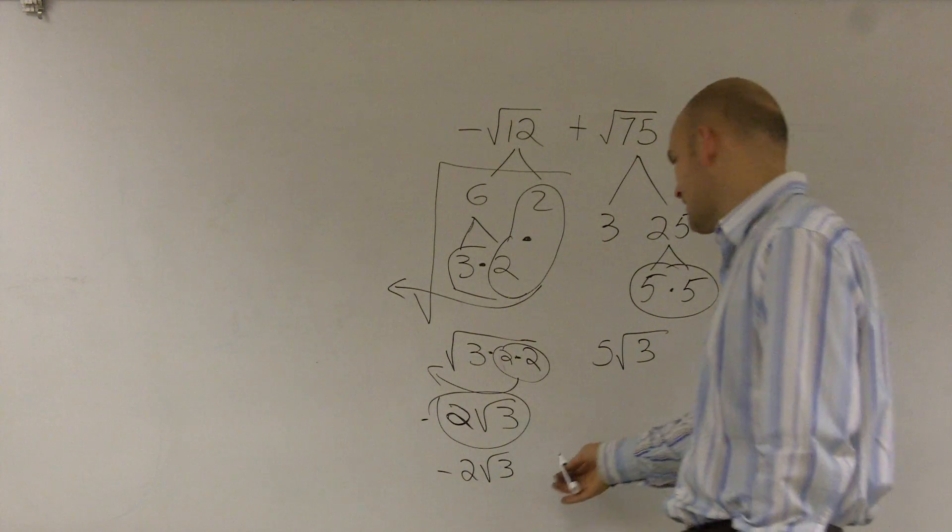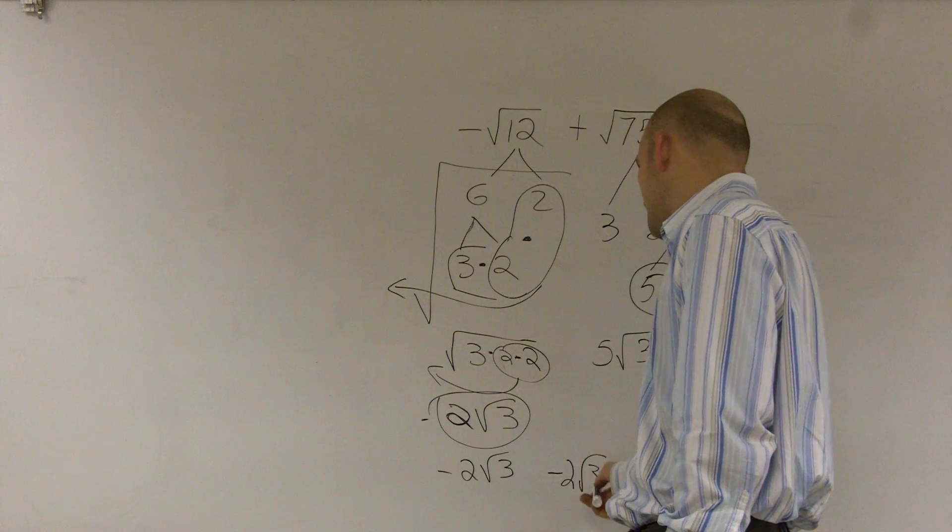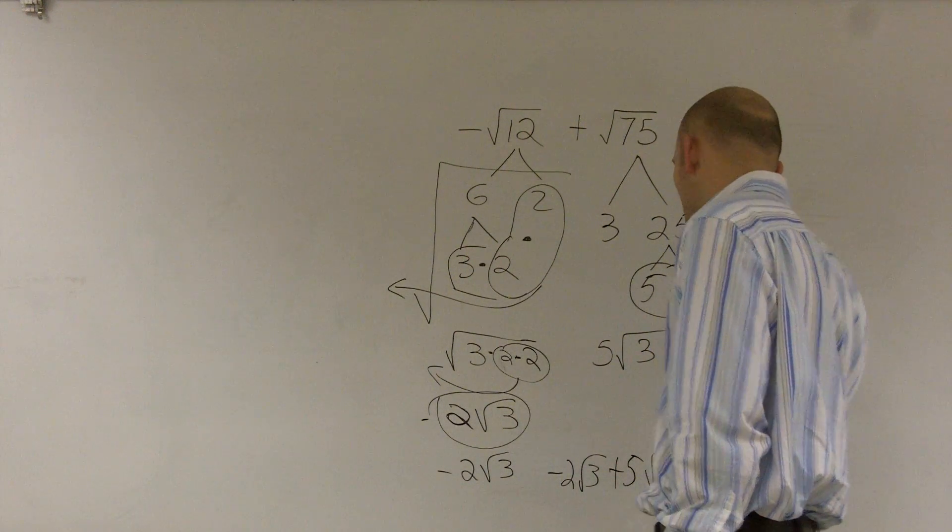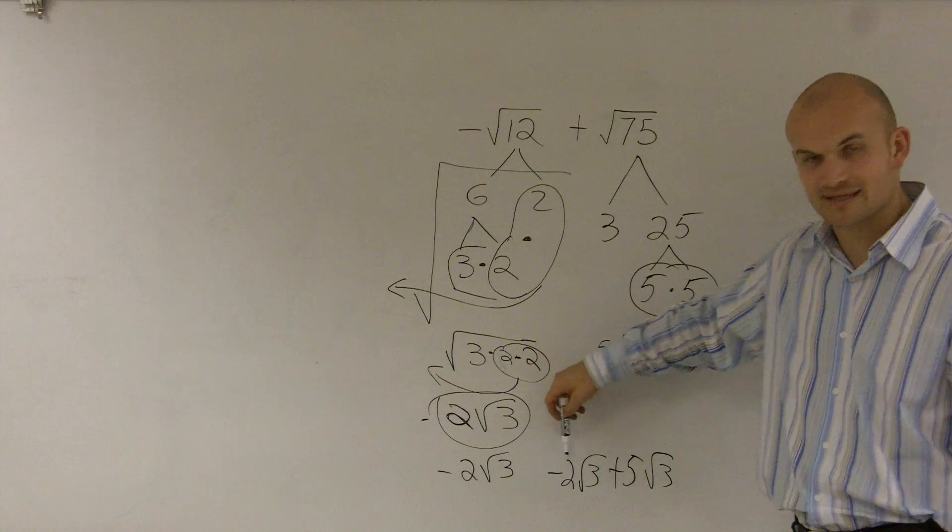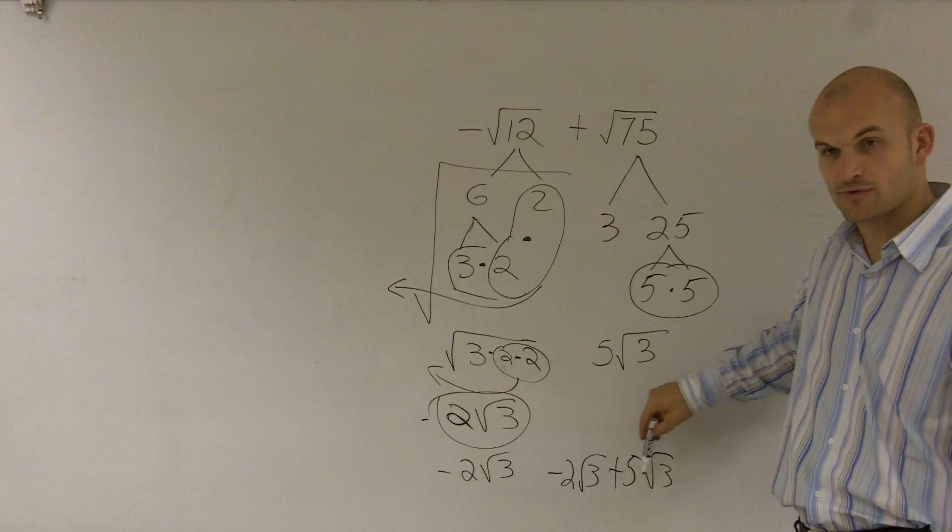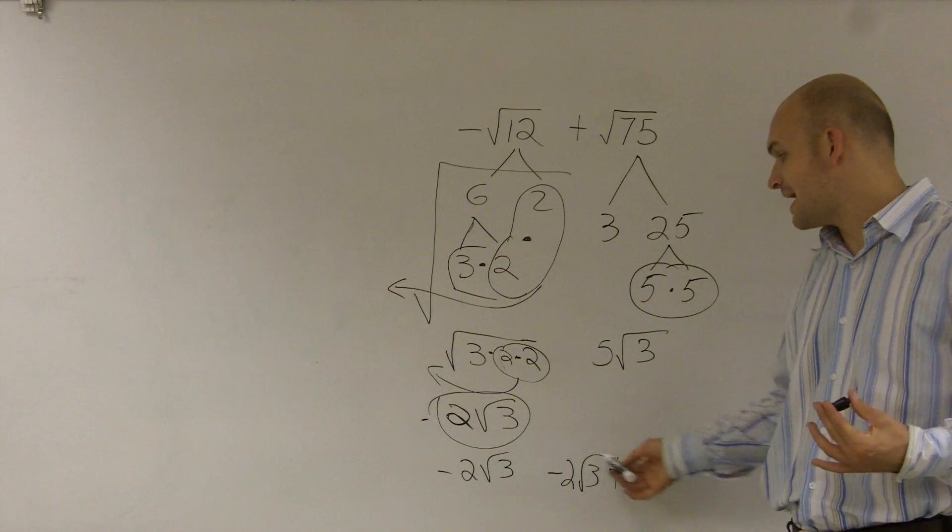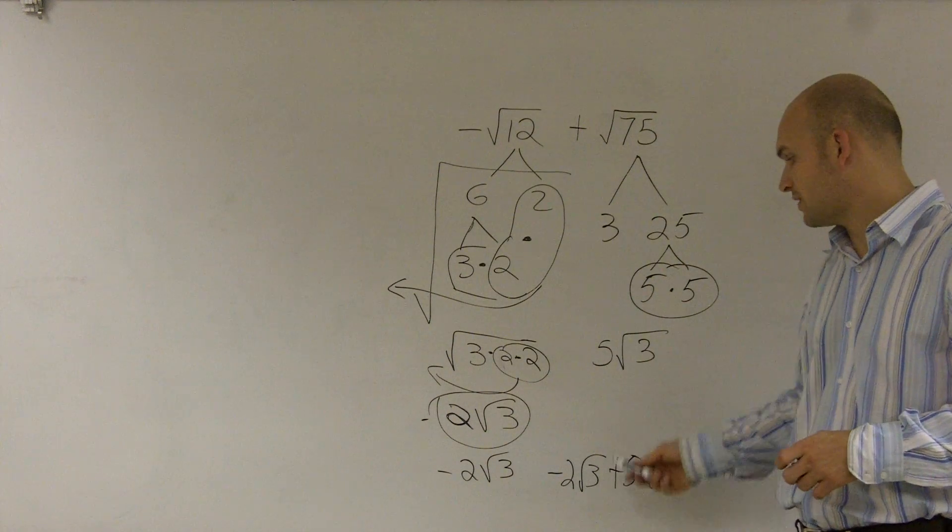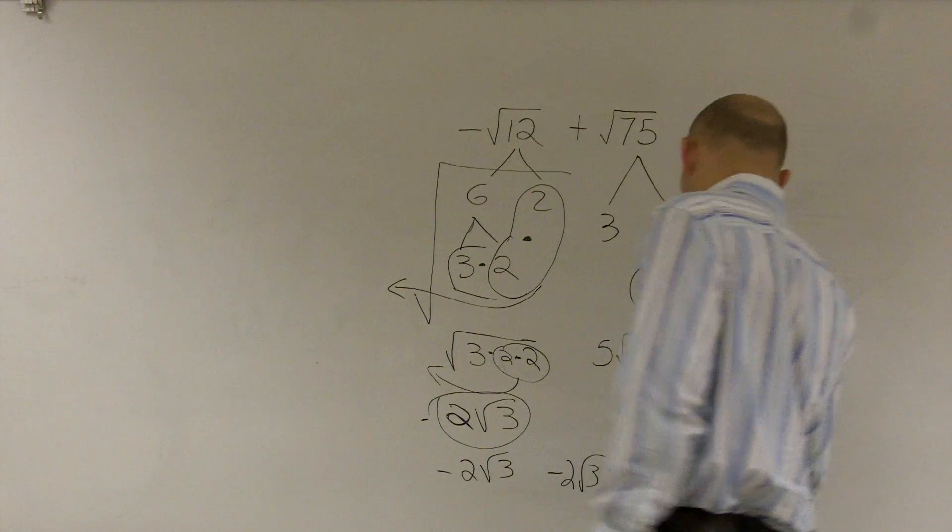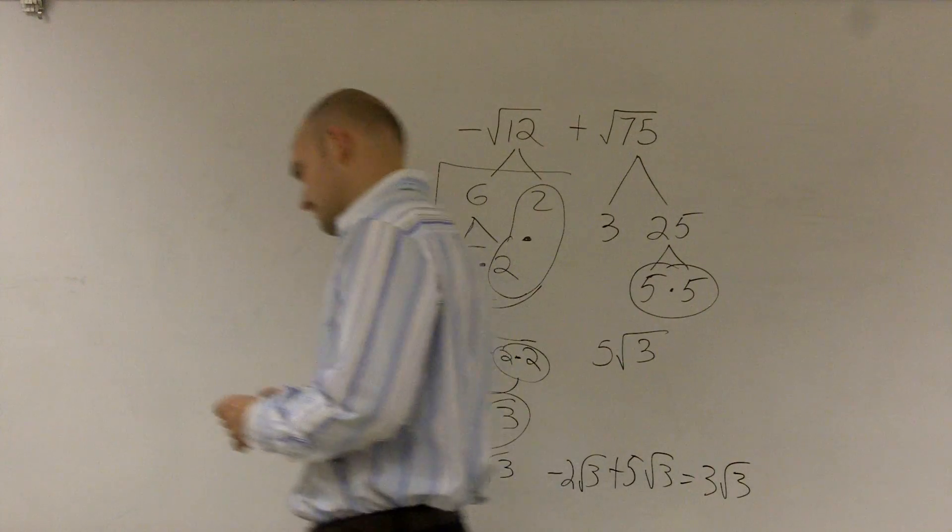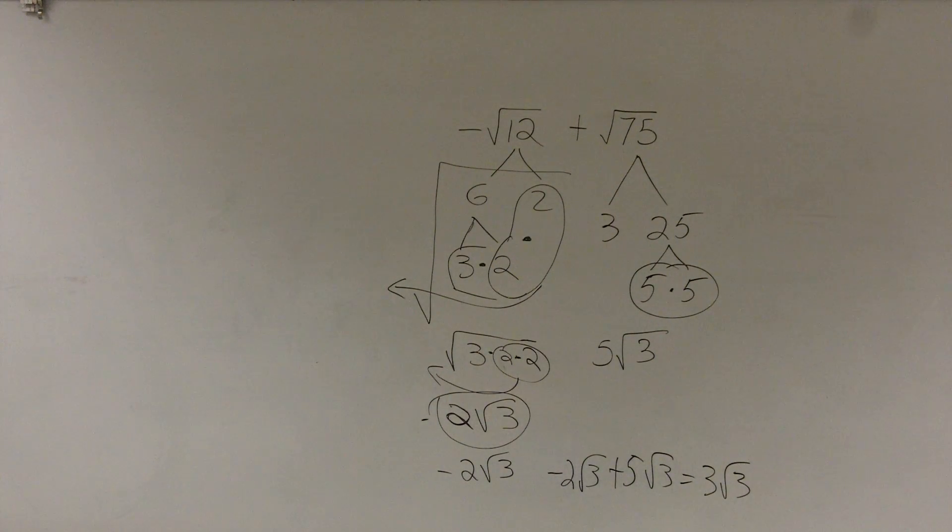So what I have now is negative 2 square root of 3 plus 5 square root of 3. And what you notice is now this is like the same term. These are like my two x's. They're exactly the same. The square root of 3 and the square root of 3. So what I can do is I can combine my coefficients of these two terms. So negative 2 square root of 3 plus 5 square root of 3 is going to equal 3 square root of 3.